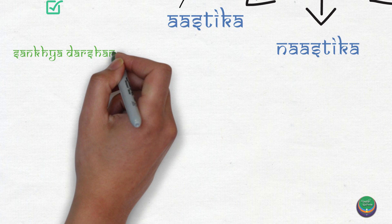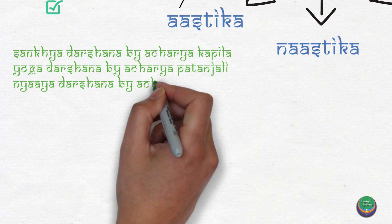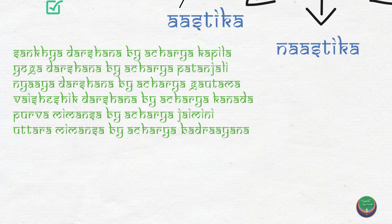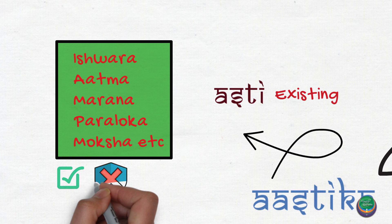The six Asthika darshanas are: Sankhya darshana by Acharya Kapila, Yoga darshana by Acharya Patanjali, Nyaya darshana by Acharya Gautama, Vaisheshika darshana by Acharya Kanada, Purvamimansa by Acharya Jaimini, and Uttaramimansa by Acharya Badrayana.